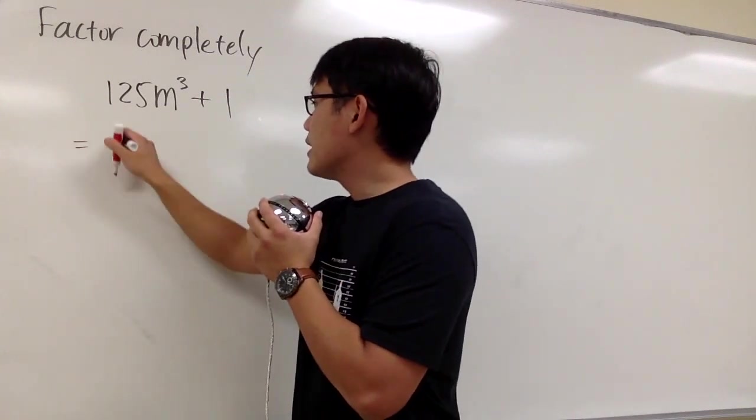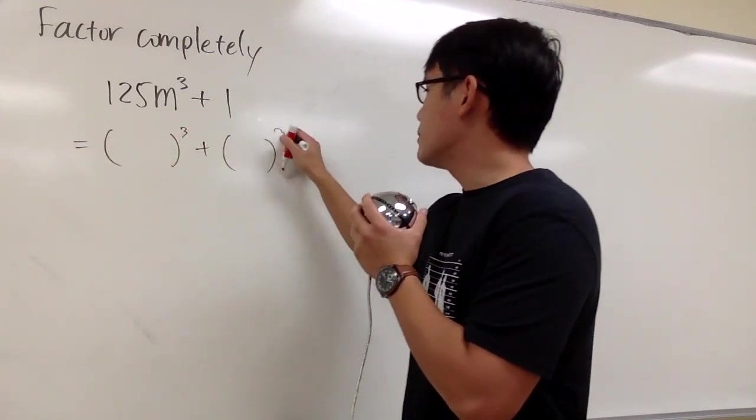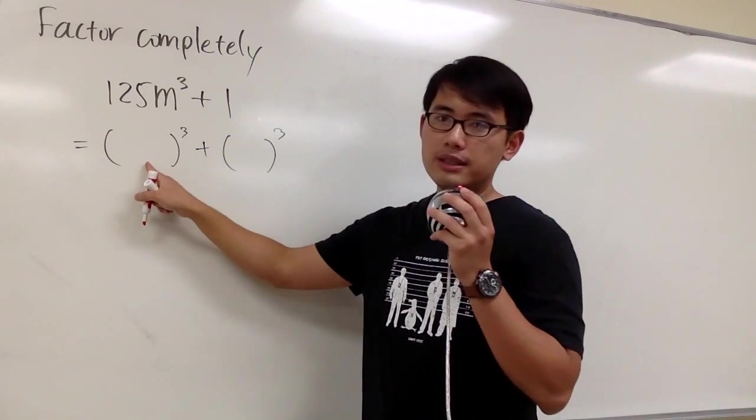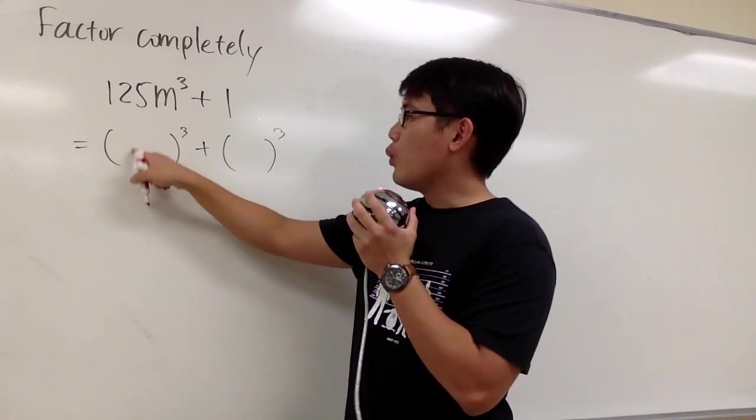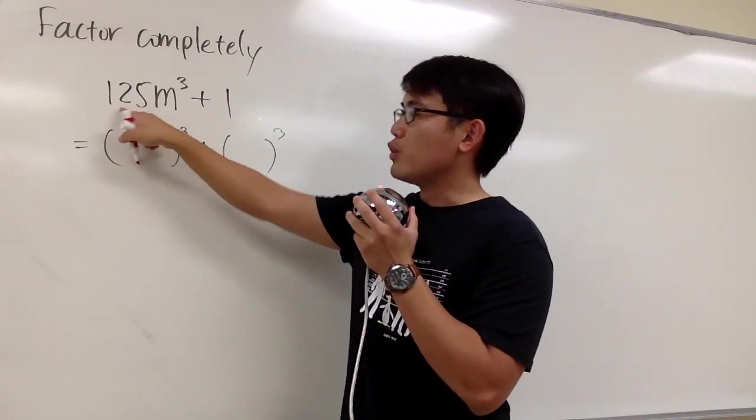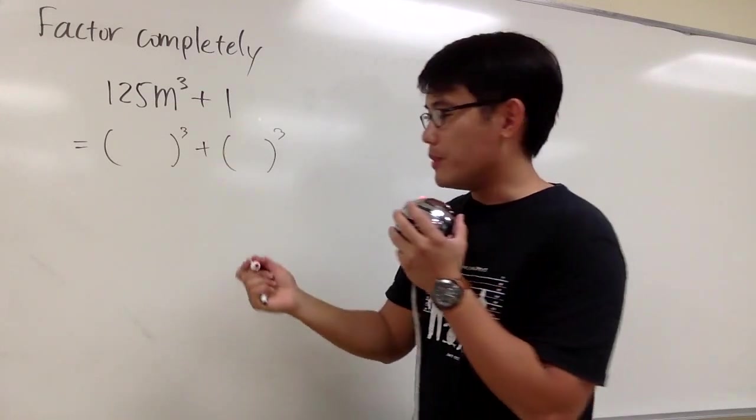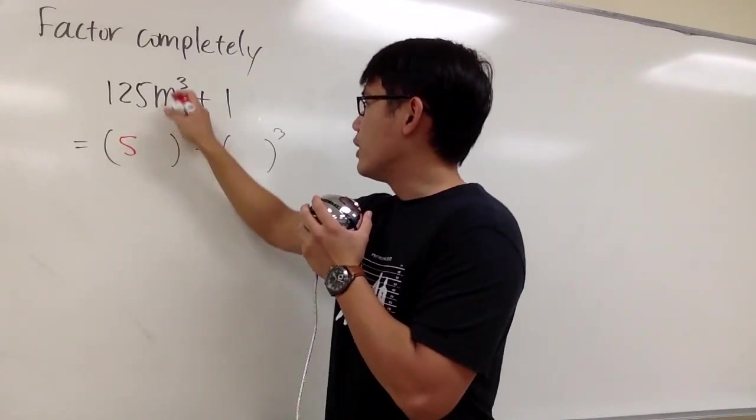We put this down as something to the third power plus something to the third power. For the first parenthesis inside, we have to ask ourselves, what times what times what will give us 125? The answer is 5, and then of course we have the m.